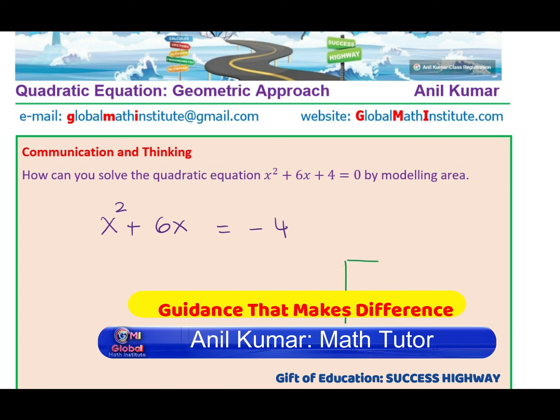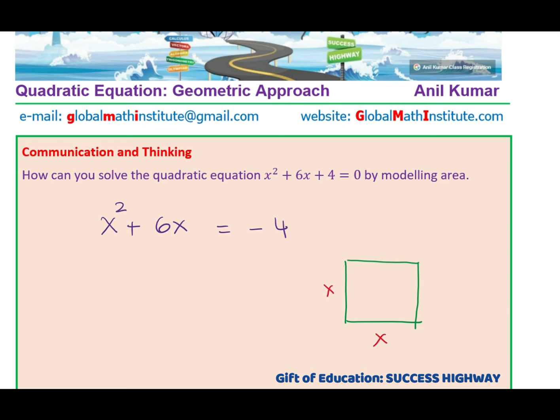So we can make a square, which is x², meaning that each side is x. 6x, split it into 3 and 3. So we have 3 on this side, 3 on this side. So we make 3x here and 3x here. So this is the area 3x. Since one side is 3, the other is x, the area is 3x.